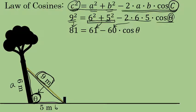The next step in the process of isolating the cosine of angle theta, and eventually angle theta, would be to subtract 61 from both sides of the equation. And 81 minus 61 is 20, which we now have as equal to negative 60 times the cosine of angle theta.